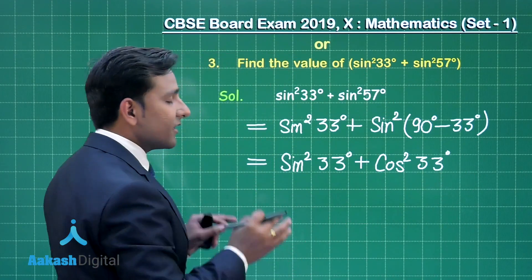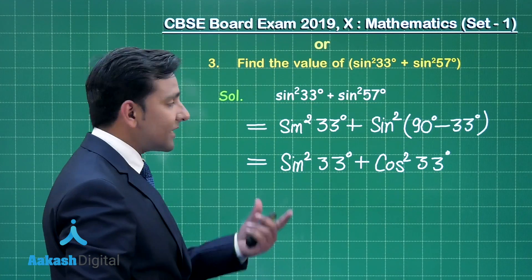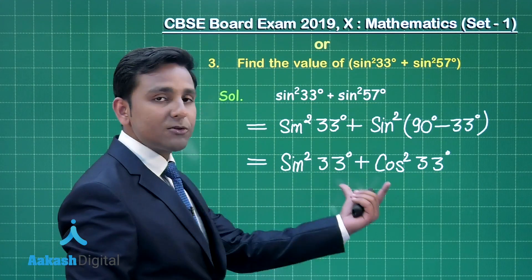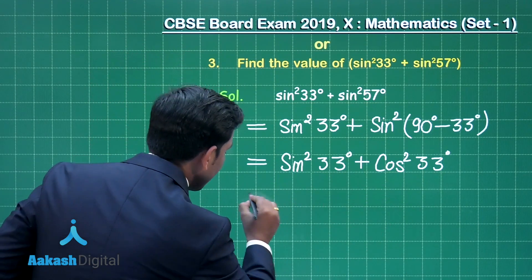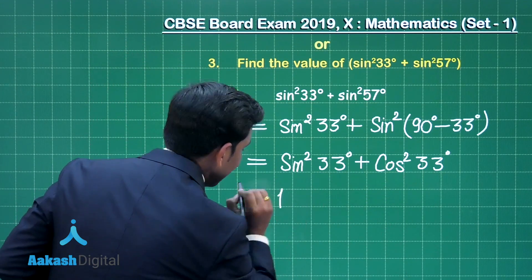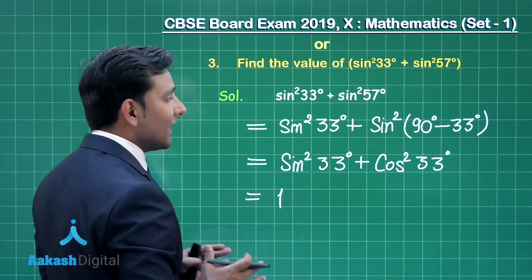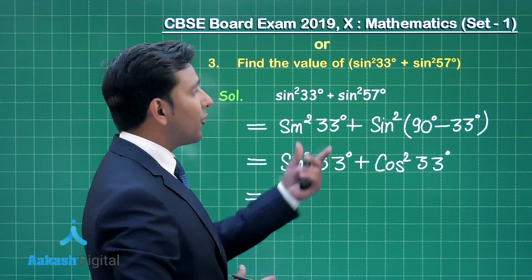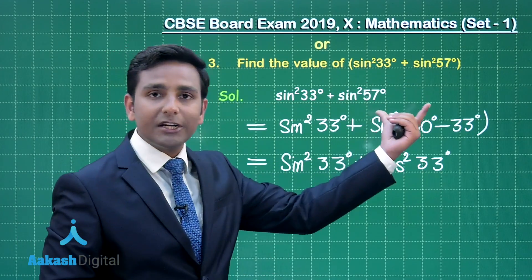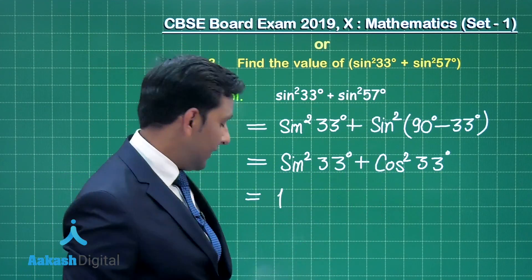Clearly we are getting the first identity sin²θ + cos²θ, which is equal to 1. This is the final answer for this question — the value of this given expression is 1.